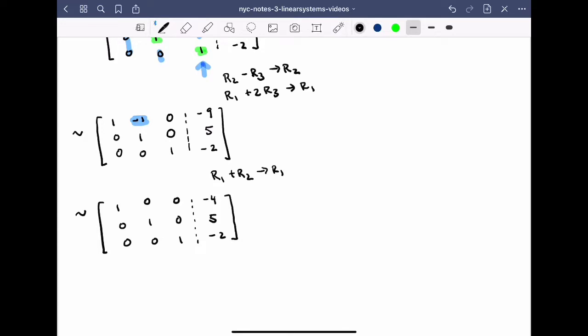Notice that I have exactly the same answer as before. From row 1, I have x1 is equal to minus 4. From row 2, I have that x2 is equal to 5. And finally, from row 3, I have that x3 is equal to minus 2.